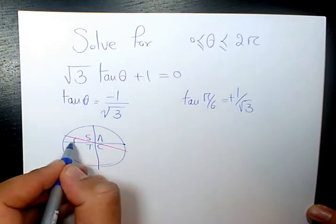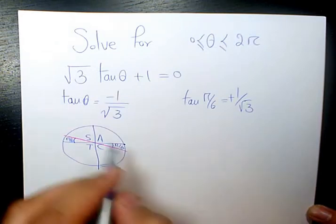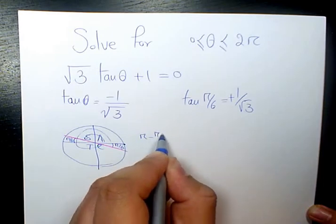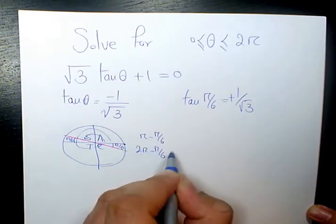So the angles will be π - π/6 and 2π - π/6.